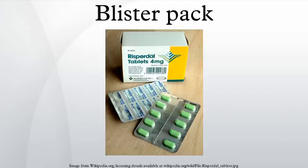Blister packs are created by means of a form fill-seal process at the pharmaceutical company or designated contract packer. A form fill-seal process means that the blister pack is created from rolls of flat sheet, plate, or film, filled with a pharmaceutical product, and closed on the same equipment. Such equipment is called a blister line. There are two types of blister machine design: rotary and flat plate.